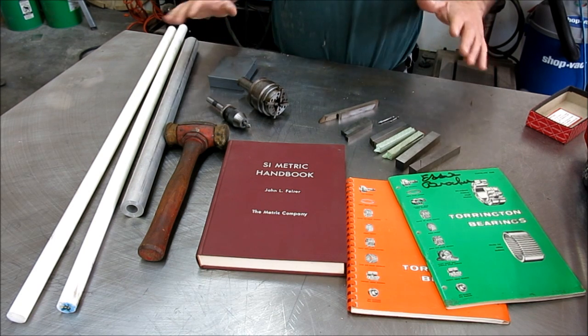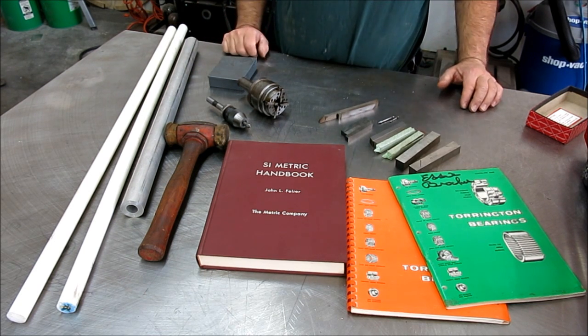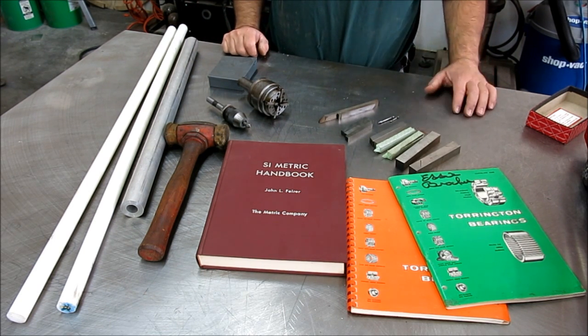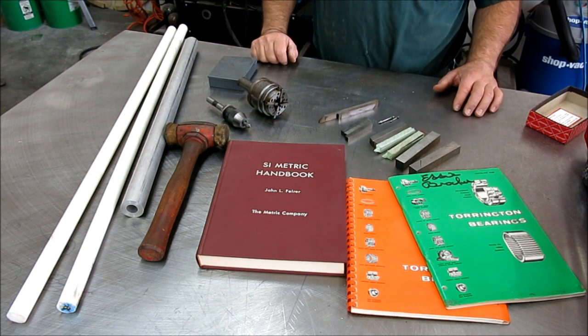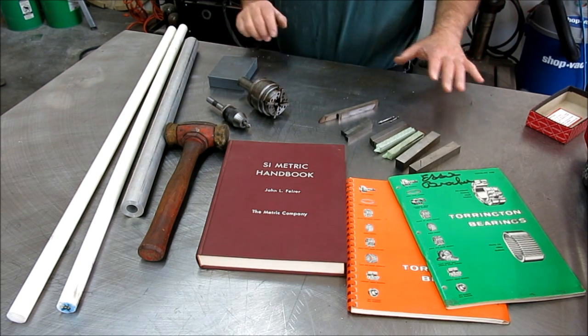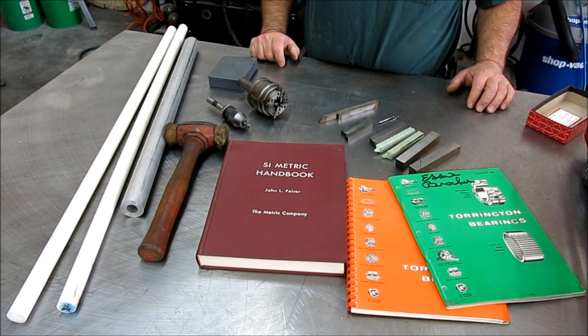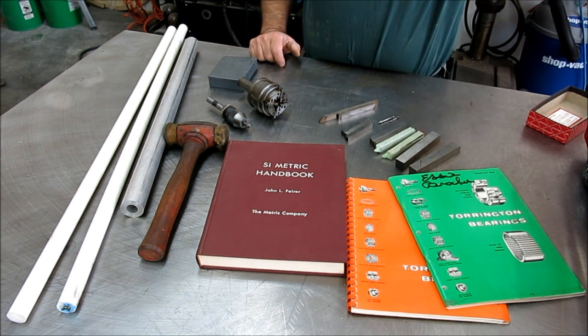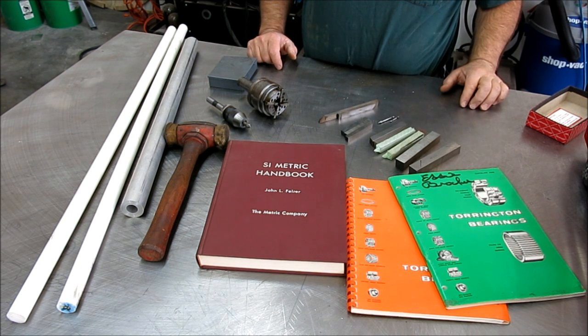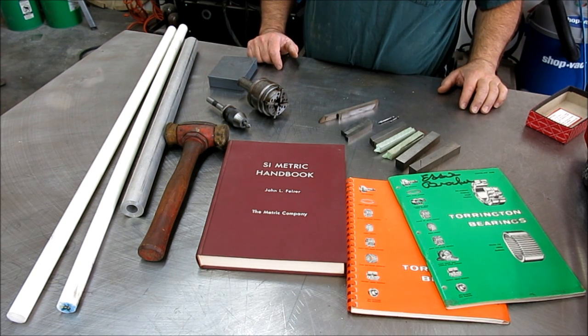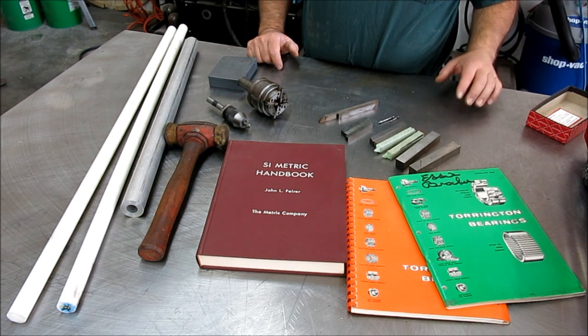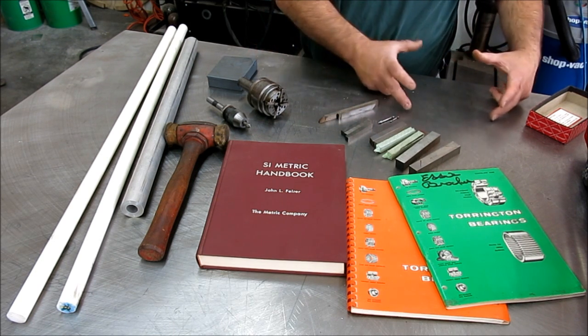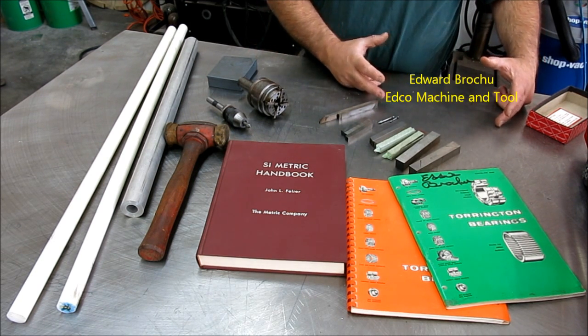Okay, so here's the whole thing altogether that I just showed you. And I just wanted to say a couple of words about the guy that this stuff came from. His name was Edward Brocu, and he had his own shop up near Santa Rosa in California here. And it was called the Edco machine and tool.